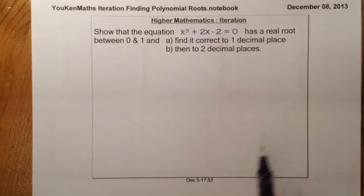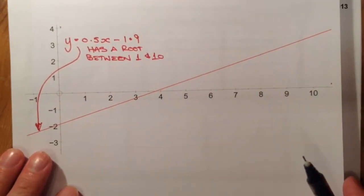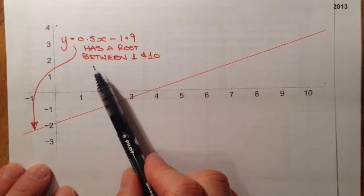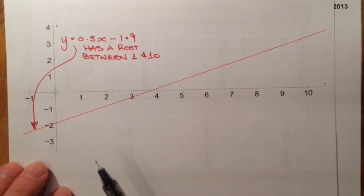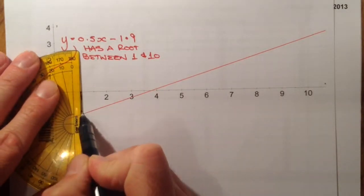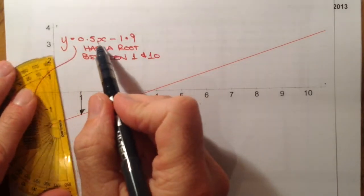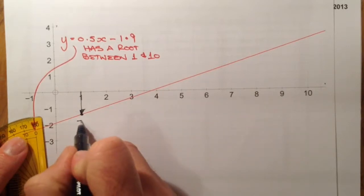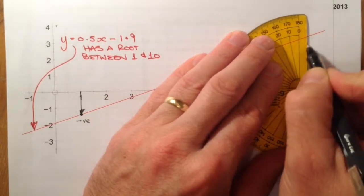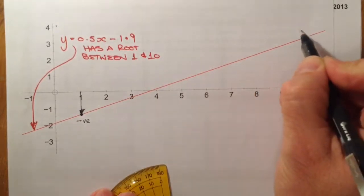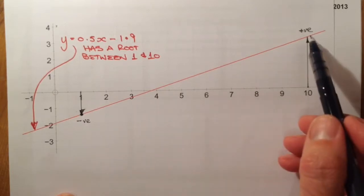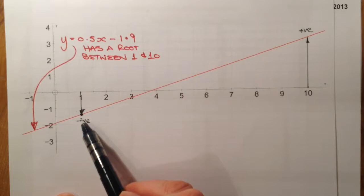Before we start, let me show you a quick idea of what iteration is really about. I've just drawn a straight line here, and what I've been told is that this straight line has a root between 1 and 10. To show that there's a root, I'm going to substitute a 1 into the equation. When I substitute that in, I get a value out.